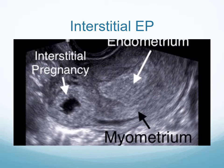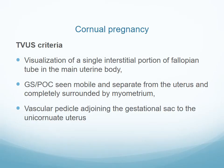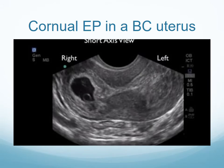In some literature, interstitial and cornual pregnancies are grouped together, but in this presentation they are separated. Cornual pregnancy is mainly found in patients with anatomical abnormality of the uterus such as unicornuate or bicornuate uterus. We have visualization of a single interstitial portion of the fallopian tube in the main uterine body. The gestational sac is seen mobile and separate from the uterus, completely surrounded by thick myometrium.